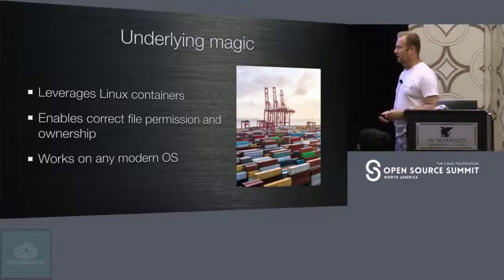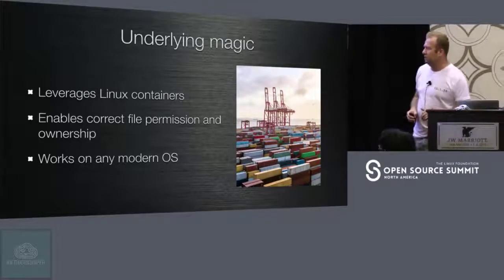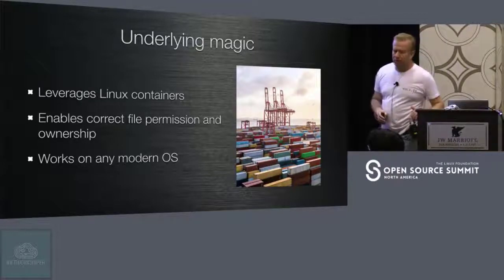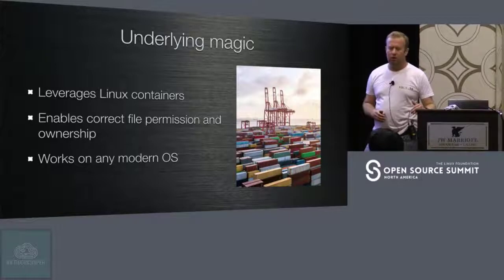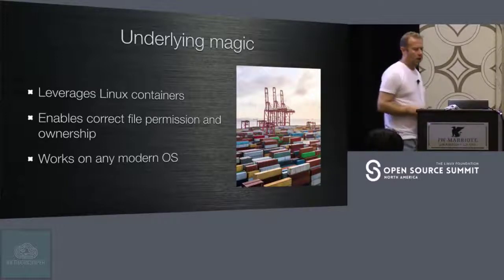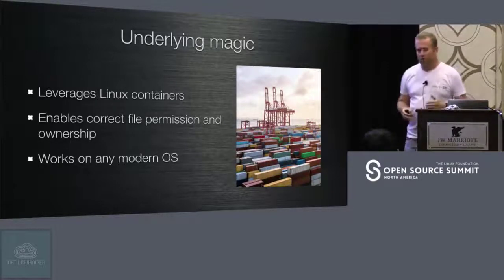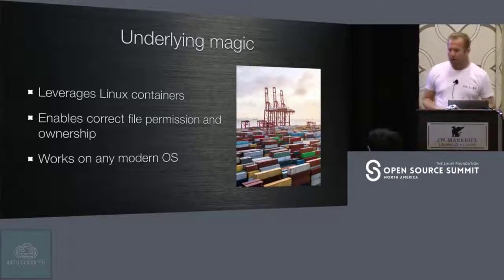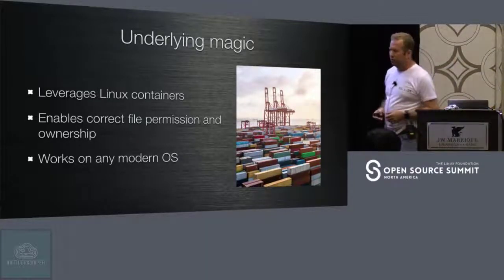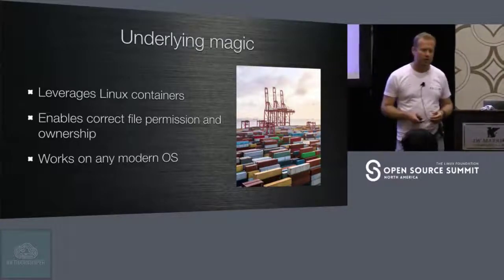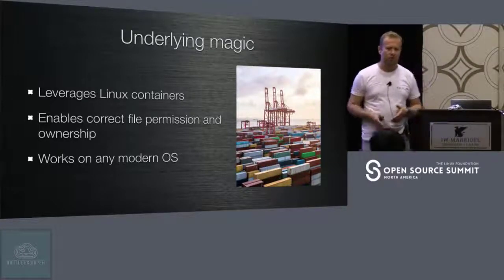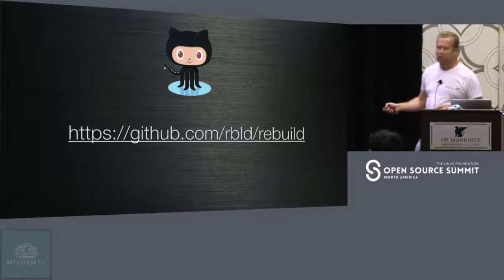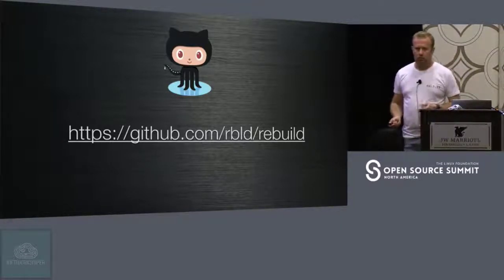Now let's see how it actually works. We are leveraging Linux containers, and one of the things we do is map the local file system into the container in order to preserve all permissions and ownership when we work with source code. So the source code is located locally on our file system while we work with different environments. The good thing is that it works on almost any modern OS — not only Linux, but macOS and Windows as well, because they all now support Linux containers. You can check the project here on GitHub.